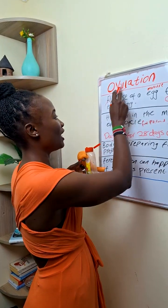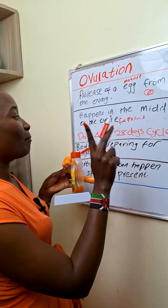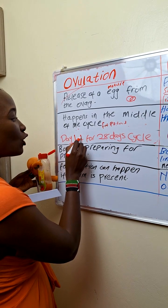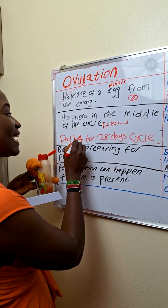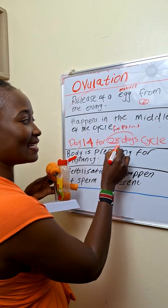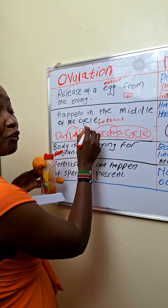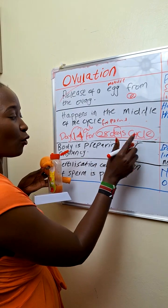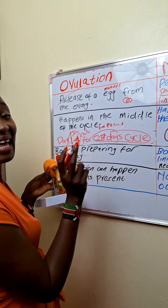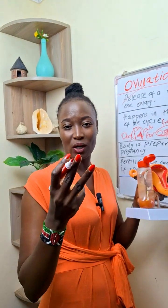The other thing is that ovulation happens in the middle of the cycle. By middle, we mean day 14 of your cycle — that is for a 28-day cycle. That's when you're ovulating. If you have a 27-day cycle, then your ovulation is on the 13th day. So it depends on your menstrual cycle.